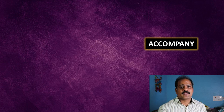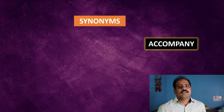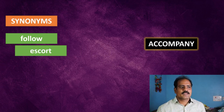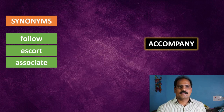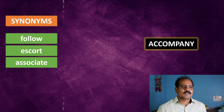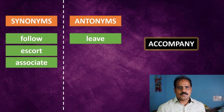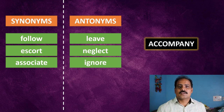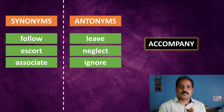Now let's look at the synonyms and antonyms of accompany as a verb. Synonyms include: follow — to go with someone; escort — to go with someone; and associate — if you associate yourself with something, you go with them, you move with them. Antonyms include: leave — you go away from them; neglect — the opposite of following; and ignore. Remember, synonyms are not always directly interchangeable but can sometimes be used in place of each other on some occasions.